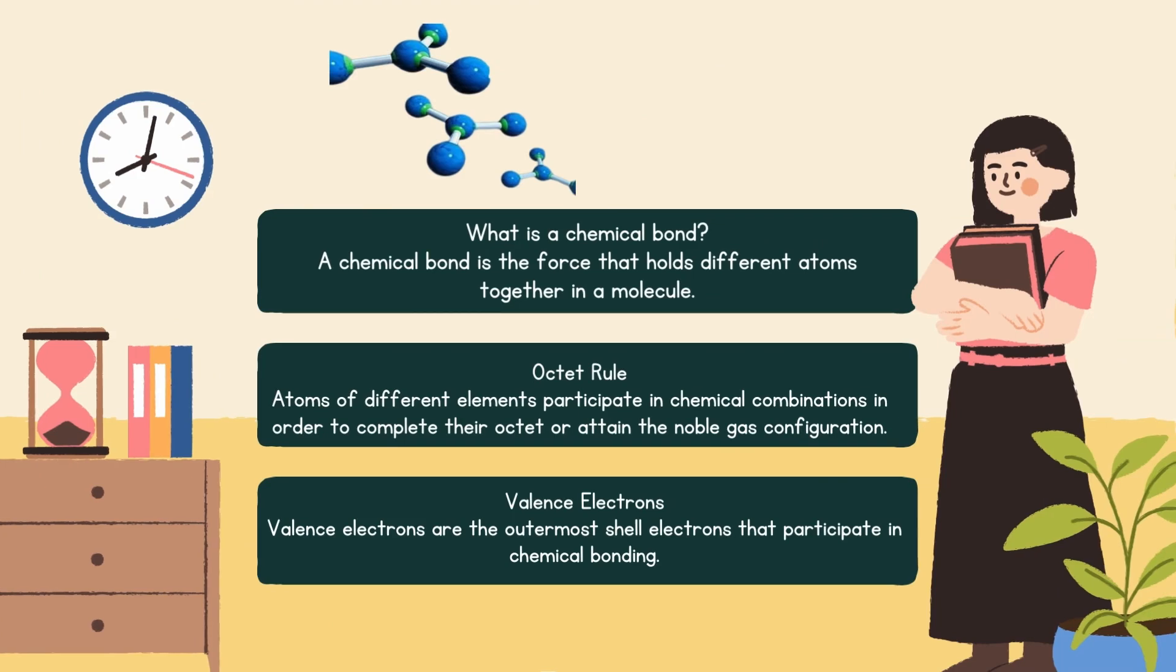What is a chemical bond? A chemical bond is the force that holds different atoms together in a molecule. What is octet rule? Atoms of different elements participate in chemical combinations in order to complete their octet or attain the noble gas configuration. What is valence electrons? Valence electrons are the outermost shell electrons that participate in chemical bonding.